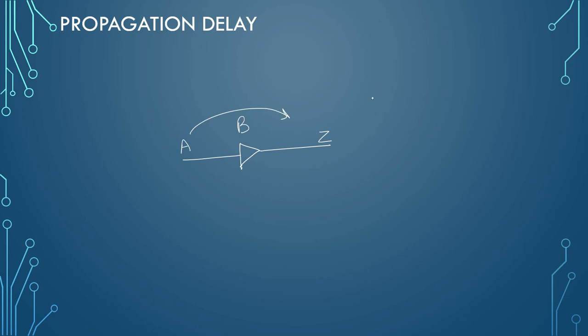Let's try to understand further with the waveform. So let's say waveform for A is something like this. And since it is a buffer, the output Z will also be same as A, but there is some delay. So let's say the output waveform of Z is like this. In our example, this is logic 0, this is 1, this is logic 0, this is 1 and let's say we have a time frame reference T.